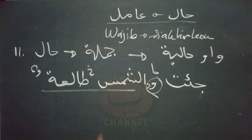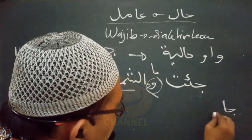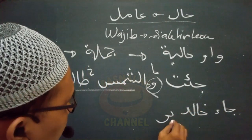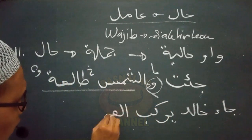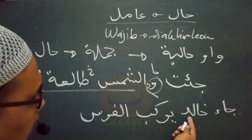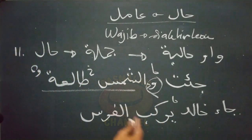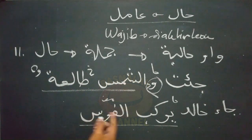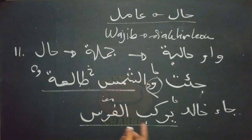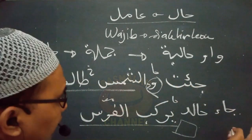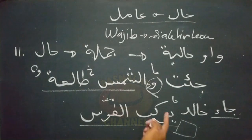Namun manakala hal yang berupa jumlah ini tidak diiringi dengan wau haliyah, maka hal boleh didahulukan dari amilnya. Contohnya seperti lafad 'ja'a Khalidun yarkabu al-farosa': datang Khalid padahal menunggangi kuda. Di sini halnya adalah berupa lafad 'yarkabu al-farosa' yang merupakan jumlah fi'liyah, namun hal yang berupa jumlah haliyah di sini tidak diiringi dengan wau haliyah. Maka dalam kondisi ini hal boleh didahulukan dari amilnya yang berupa lafad 'ja'a'. Jadi boleh dikatakan 'yarkabu al-farosa ja'a Khalidun'.